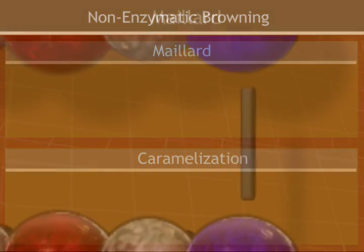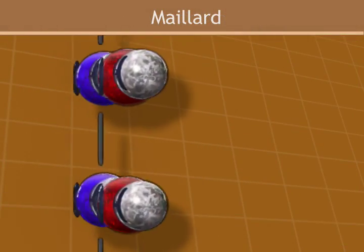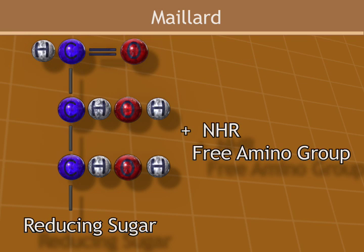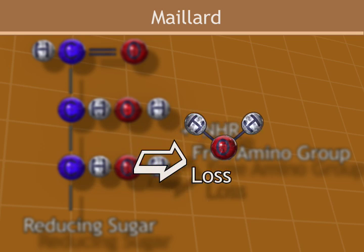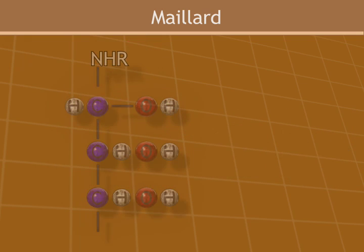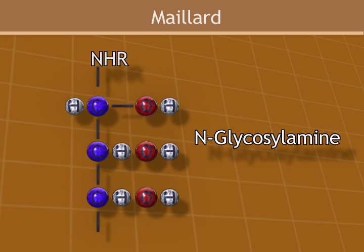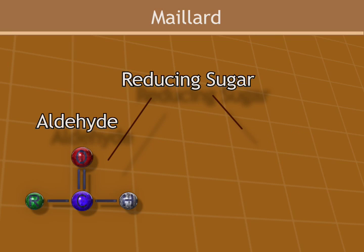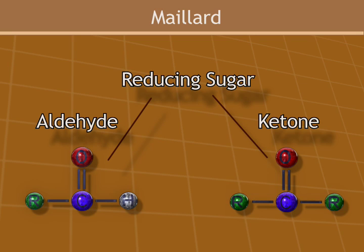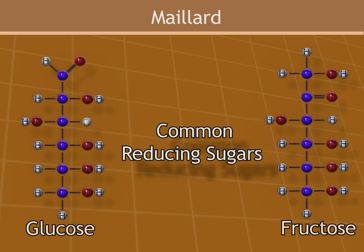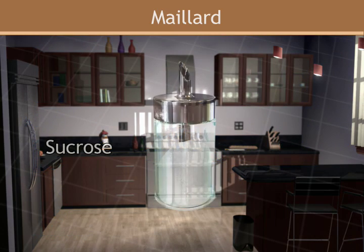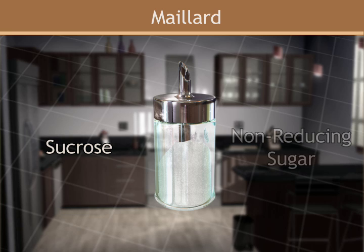The Maillard reaction begins with a reaction between the carbonyl group of one reducing sugar, such as glucose, and a free amino group from an amino acid, such as lysine, or from a protein, to produce N-glycosylamine. A reducing sugar is a sugar that contains an aldehyde or ketone group. Common reducing sugars include glucose and fructose. It is important to note that sucrose, common table sugar, is a non-reducing sugar.